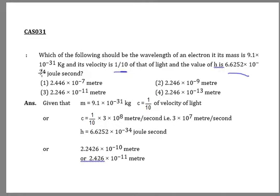This will be 34, not 24. So what we need to find is lambda. What is lambda? Lambda is h by mv. This is the wavelength, h by mv.